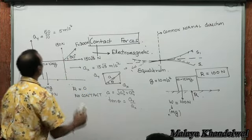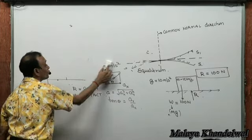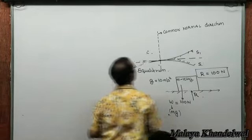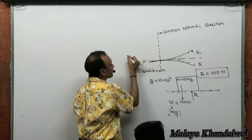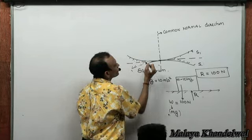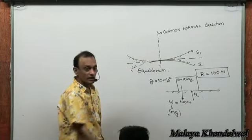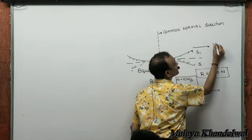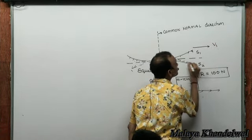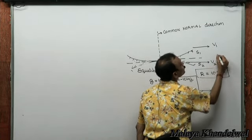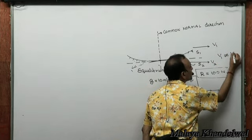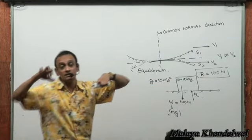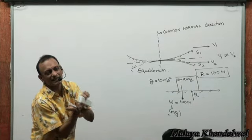Forces in the common normal direction are normal reactions — they always push and are electromagnetic in character and self-adjusting. In the parallel direction, if two surfaces have relative motion — that is, if their velocity components in the parallel direction are not equal — they will rub against each other.